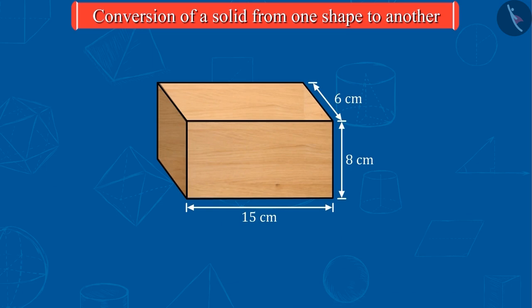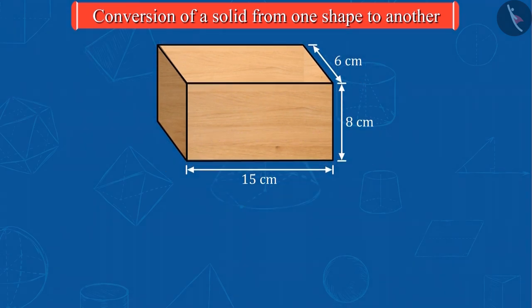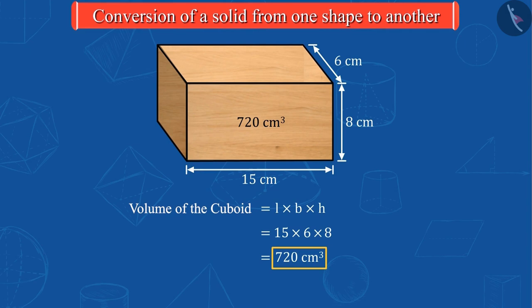Now, let's look at this piece of wood. Its length is 15 cm, width is 6 cm and height is 8 cm. Can you guess the volume of this piece of wood? Perfect! The volume of this piece will be 720 cm³.